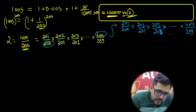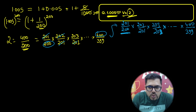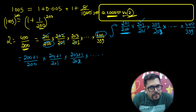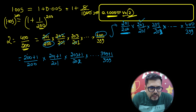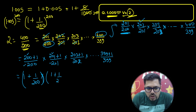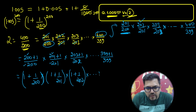Now I want to write each fraction in a specific format. 201/200 can be written as (200+1)/200, which is (1 + 1/200). Similarly, 202/201 = (1 + 1/201), and 203/202 = (1 + 1/202), and so on. The last term will be 400/399 = (1 + 1/399). So 2 = (1 + 1/200) × (1 + 1/201) × (1 + 1/202) × ... × (1 + 1/399).